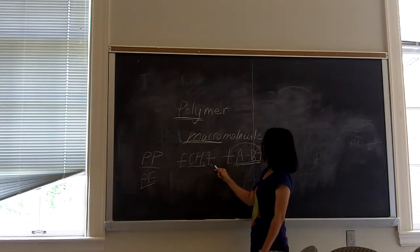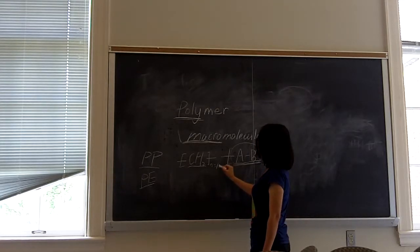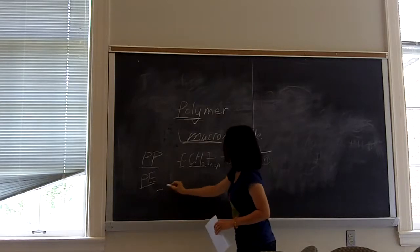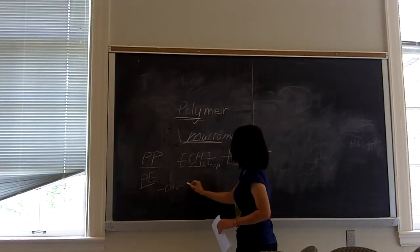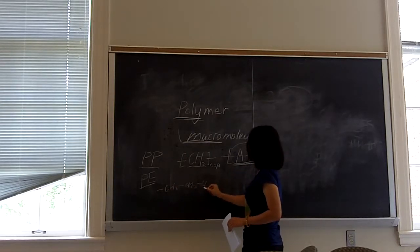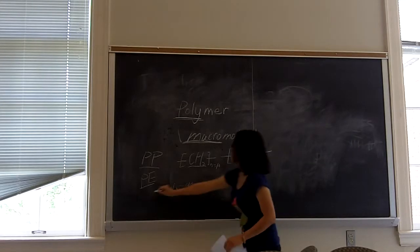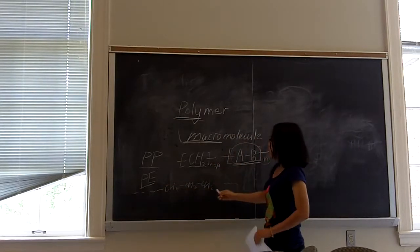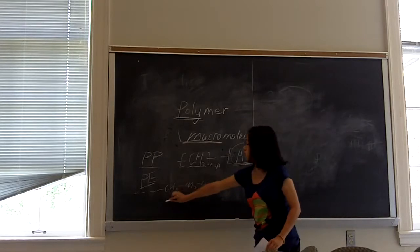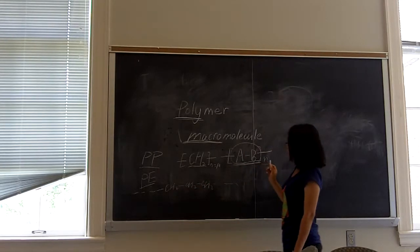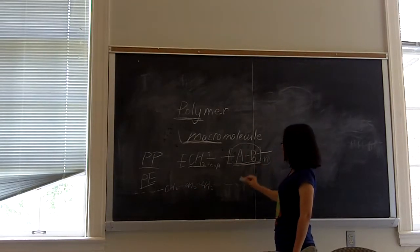For example, if the N equals 10, then we have PE like CH2, CH2, CH2, CH2, CH2, CH2, CH2. So it's a chain. It's basically a long chain. So it's a basic long chain.